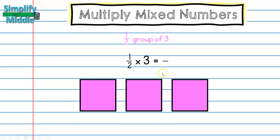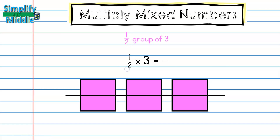Whenever we're multiplying, remember we always want to draw out our second factor first. So I've drawn out my three here, and I want to find half of that. The denominator on the first factor tells me how many pieces to cut my whole into, which is two. Then I ask myself for my product numerator: how many pieces are there?